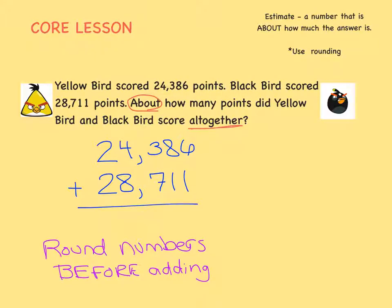When we are estimating, we always round the numbers before we add. This makes it easy to do in our head. Both of these numbers go to the ten thousands place, so we want to round to the largest place in a number. So we're going to round both of them to the ten thousands place.